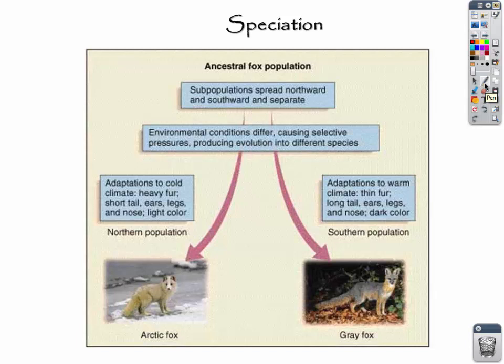We need to talk about one last really important concept: speciation — the creation of a new species. Now we're talking about macroevolution. When you have the creation of a new species, that's macroevolution. When you have changes within a species, that's microevolution. We're going to talk about macroevolution — the creation of a new species.